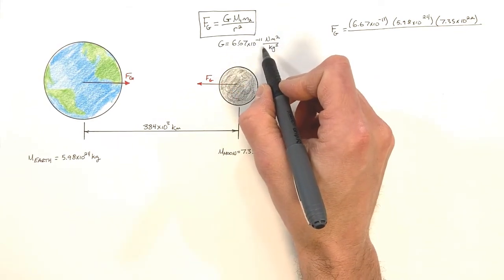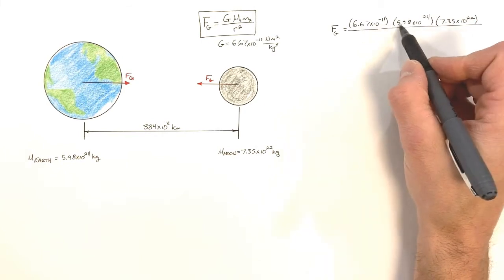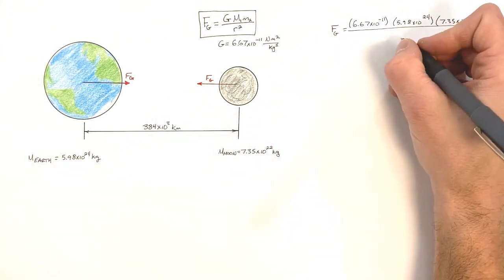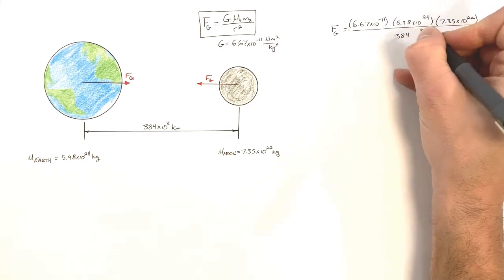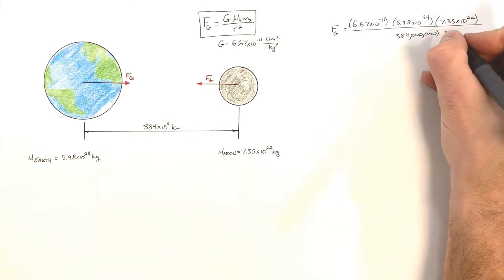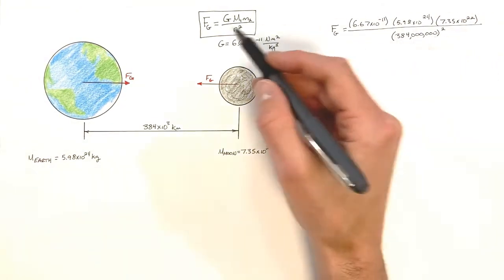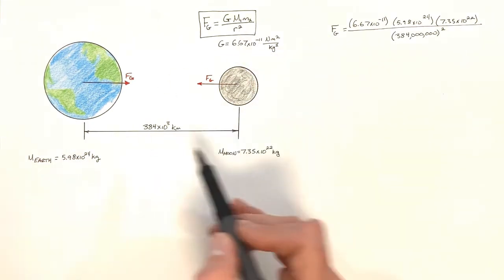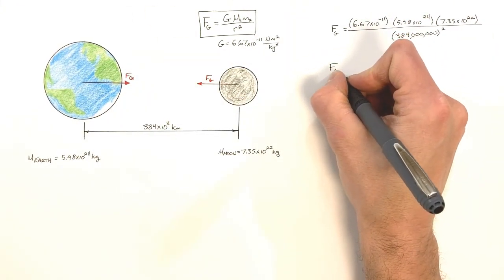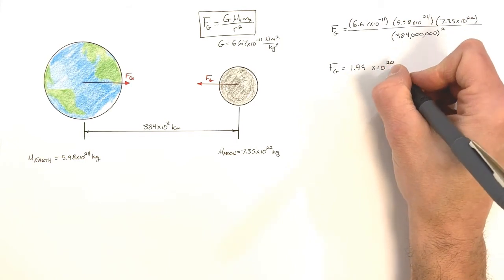Anytime we use this equation with the gravitational constant as shown, we need everything in meters, kilograms, and newtons. So we convert 384,000 kilometers into 384,000,000 meters — that value is then squared in the denominator. This is simply Newton's law of universal gravitation applied with the values for the moon and the earth, and what we come up with is a force by gravity equal to 1.99 times 10 to the 20th newtons.